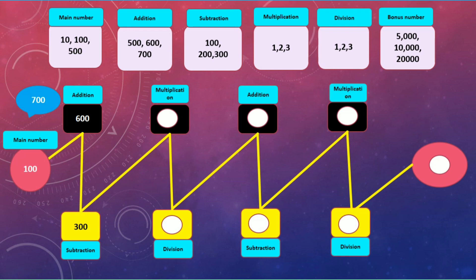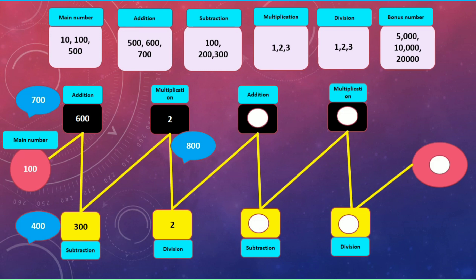The next stage is subtraction. If I select 300 from the subtraction bowl, I have to subtract from my total score: 700 minus 300 is equal to 400. So right now my score is 400. My next stage is multiplication. The total score is 400. If I select 2 from the multiplication bowl, 400 times 2 is equal to 800. Now my total score is 800. Next zone is division. If I select 2 from the division bowl, 800 divided by 2 is equal to 400. Now my total score is 400.